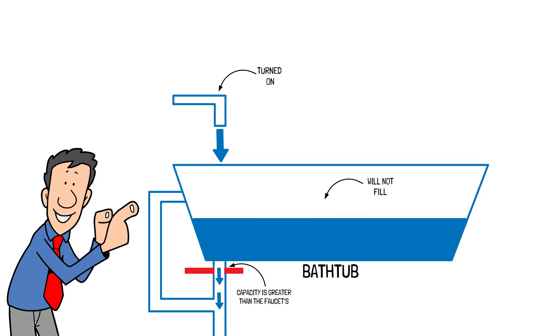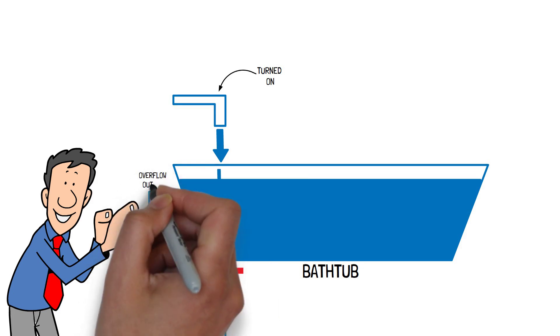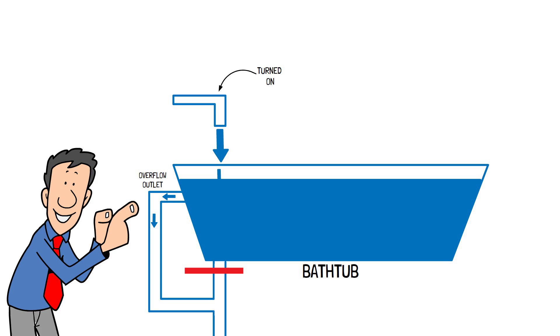drains faster than it enters the tub. If this were reversed and the faucet's capacity was greater than the drain's, the tub would overflow because water is entering the tub faster than it can drain. This is why tubs have overflow outlets. The water will only get as high as the overflow outlet.